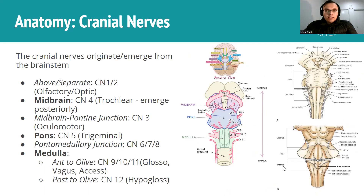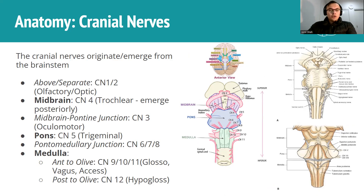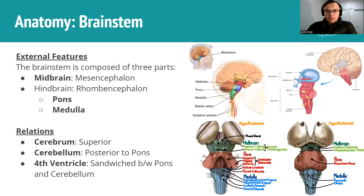The 12 cranial nerves emerge from the brainstem, with some exceptions. Cranial nerves one and two lie well above the brainstem and emerge from the cerebrum - that's the olfactory and optic nerves. Cranial nerves three and four are when we start to see emergence from the brainstem. Cranial nerve four is tricky because instead of emerging anteriorly like most others, it actually emerges posteriorly from the midbrain, then wraps around the posterior aspect and comes out anteriorly.